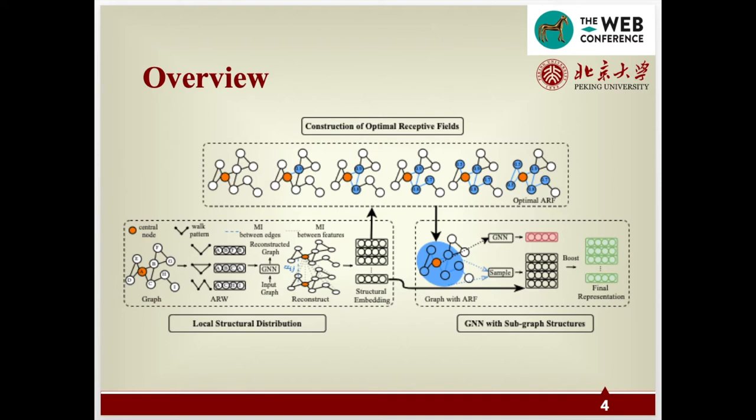Then, as the generated receptive fields are irregular, we designed a subgraph aggregator to boost node representations and theoretically prove that it has the ability to capture the complex structures in receptive fields.